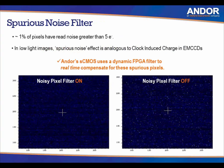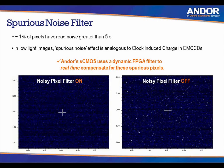A spurious noise filter is available as a user-controlled option. Approximately 1% of total pixels in the sCMOS chip will have a read noise greater than five electrons. If the spurious noise filter is turned on, these very noisy pixels are removed from the image. In low-light images, the spurious noise effect is analogous to clock-induced charge in EMCCD cameras. The spurious noise filter can be turned on and off using the software — it is not built into hardware.